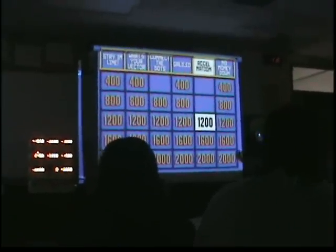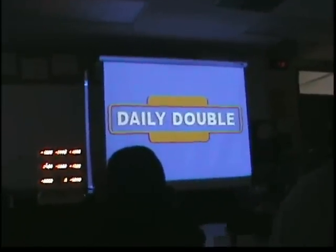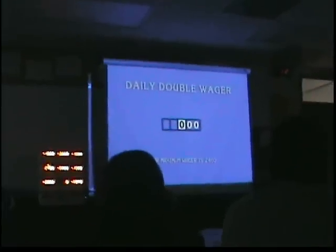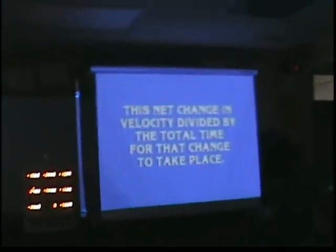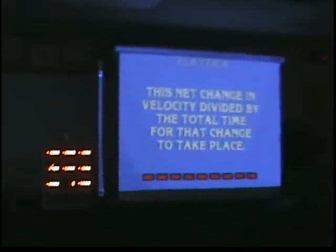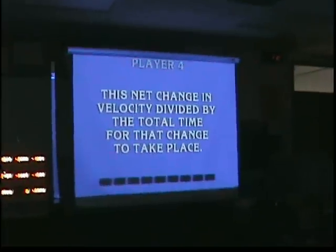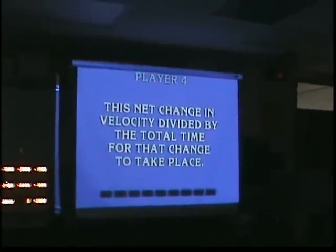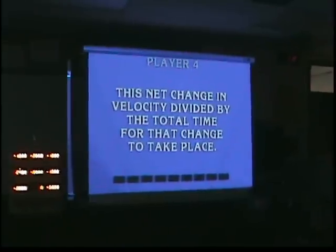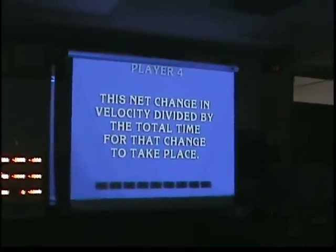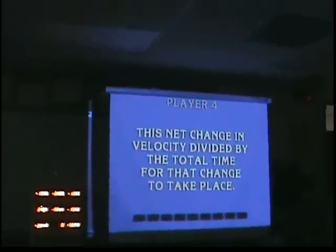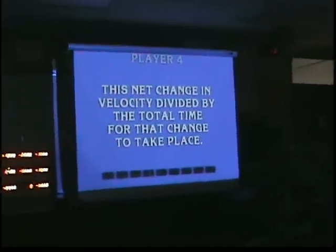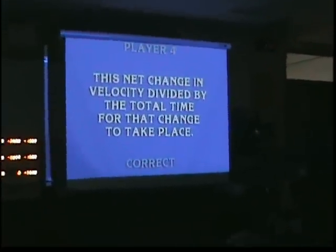Acceleration Nation — this guy is the double deputy champion. 400. Only he gets the net change in velocity divided by the total time for that change to take place. Incorrect. Change in velocity divided by the total time for that change — acceleration. We will say if that's 100% correct. Acceleration is acceptable. It was average acceleration. We will take that correct.